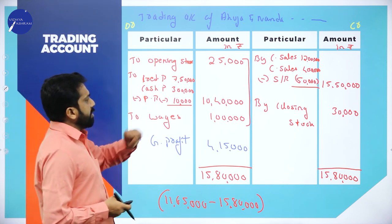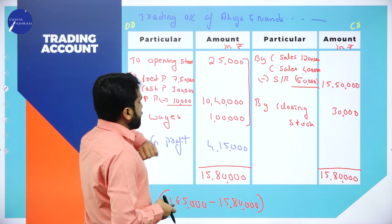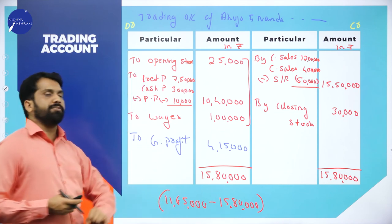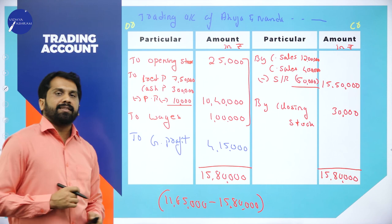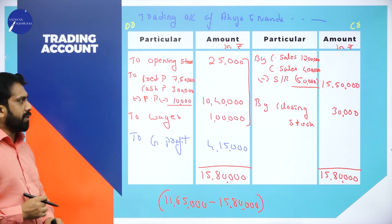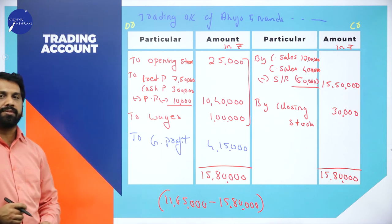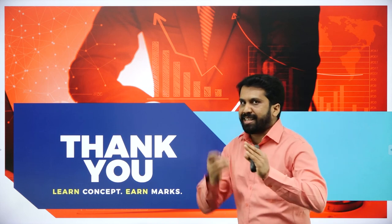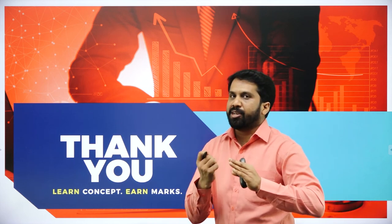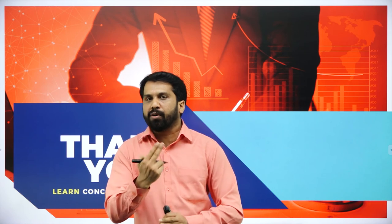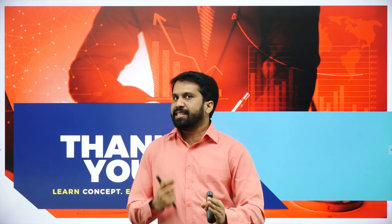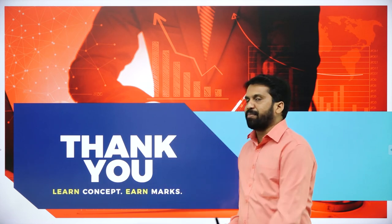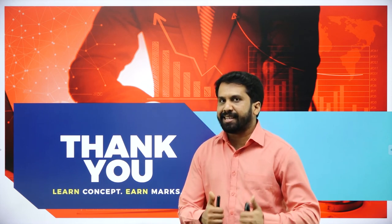The debit total is 25,000 plus 10,40,000 plus 1,00,000 equals 11,65,000. The credit total is 15,80,000. The gross profit is 15,80,000 minus 11,65,000 equals 4,15,000. So gross profit is 4,15,000. Why gross profit? Because only manufacturing expenses are deducted; running expenses are not yet deducted — when you deduct those too, you get net profit. Today we completed the trading account and worked out two problems. As I always say: learn concept and earn marks. Thank you.